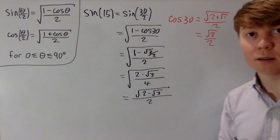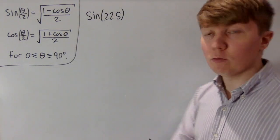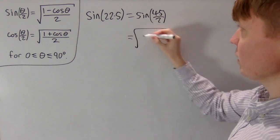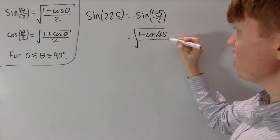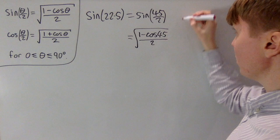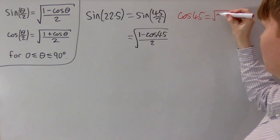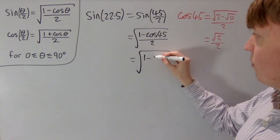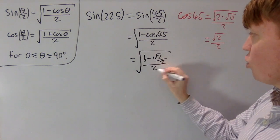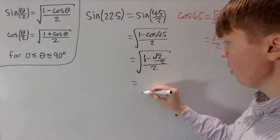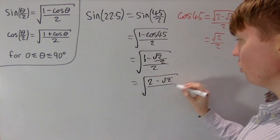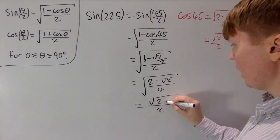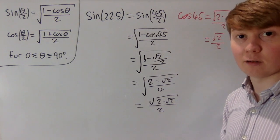Similarly for sin 22.5, we write this as sin(45 divided by 2) and use the half-angle formula with θ = 45, giving the square root of (1 minus cos 45) all divided by 2. Cos 45 is root 2 over 2, so substituting gives the square root of (1 minus root 2 over 2) all divided by 2. Multiplying the top and bottom of the fraction by 2 gives, in one big square root, (2 minus root 2) all divided by 4. Taking out the square root of 4 as 2 in the denominator gives root (2 minus root 2) all divided by 2 as our exact value for sin 22.5.